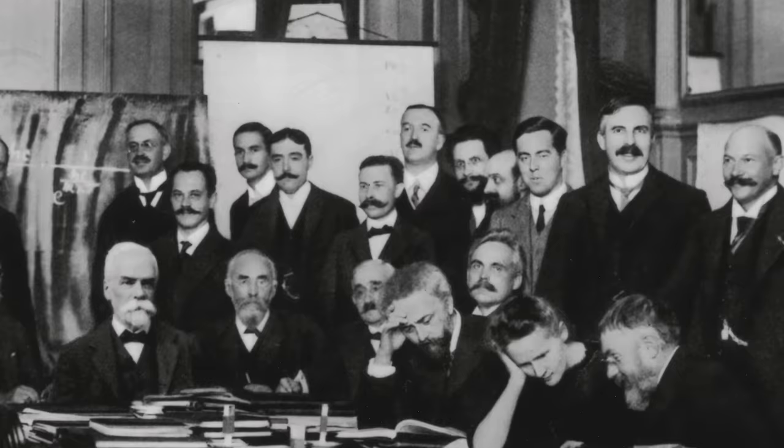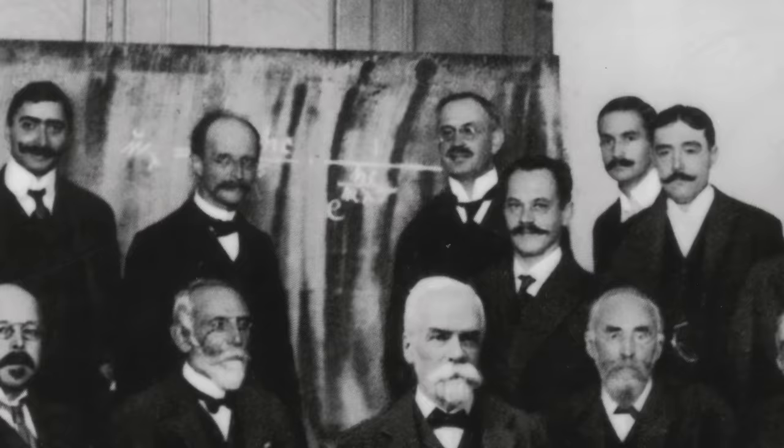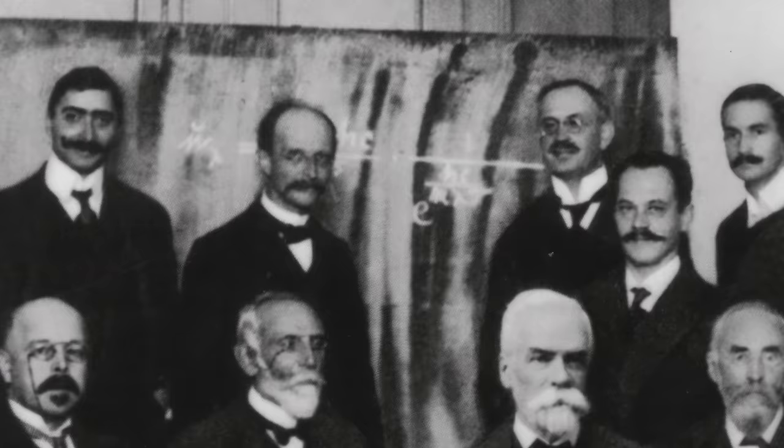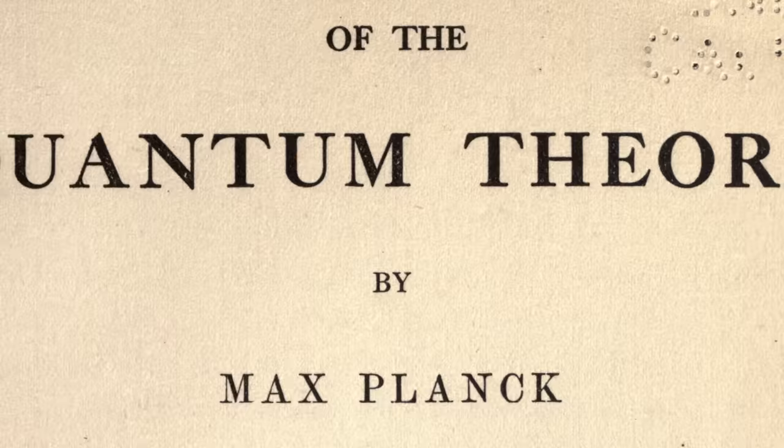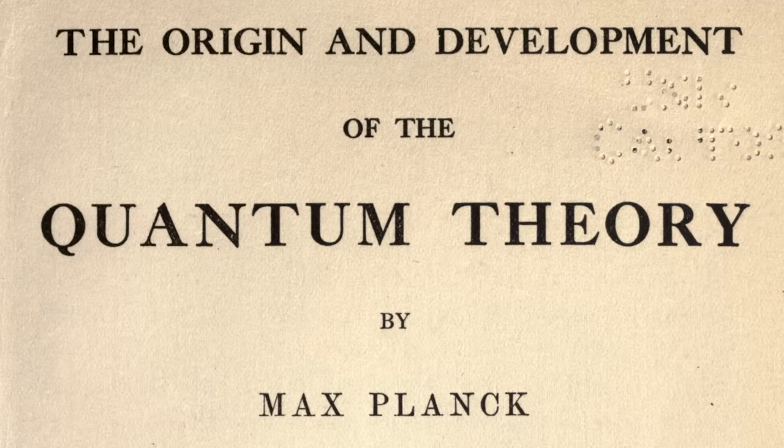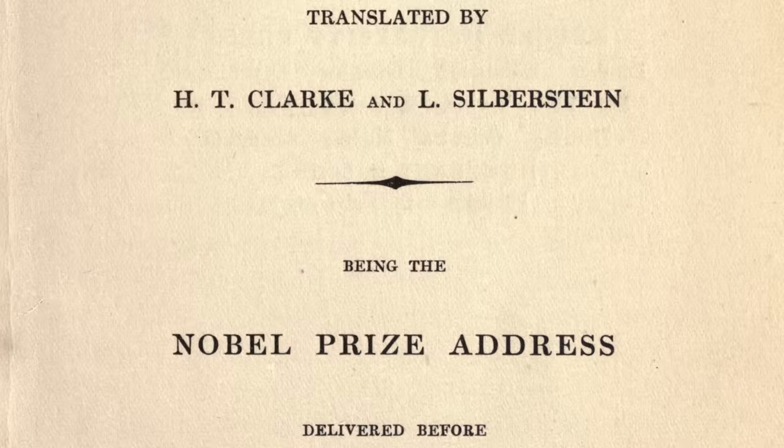In 1900, Max Planck was desperate. He had been struggling to understand how objects glowed as you heated them, from red to white hot. Like others, he had been trying to use the theory of light, written into James Clerk Maxwell's theory of electromagnetism. And, like the others, he had failed. In his desperation, he threw out the classical ideas of heat and energy. Thinking he had introduced little more than a mathematical trick, Planck had unknowingly invented quantum mechanics. But this trick, this quantisation, worked. And Planck would win the Nobel Prize in 1918 for his insight.